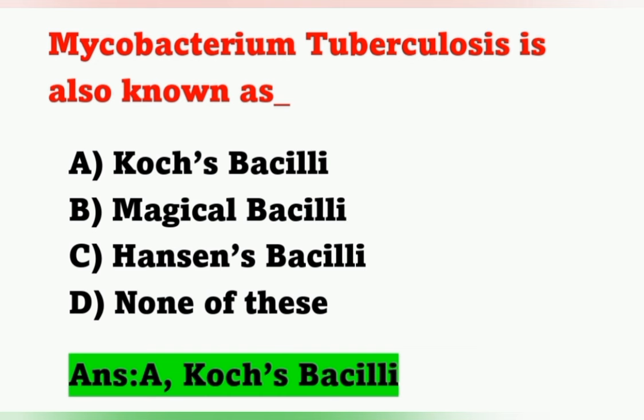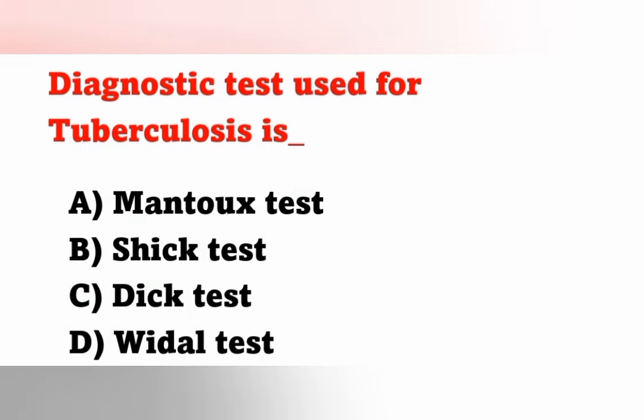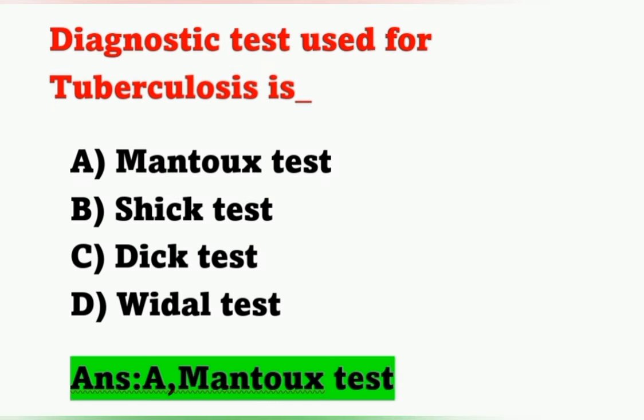The next question: diagnostic test used for tuberculosis. Options: Option A, Mantoux test; Option B, Schick test; Option C, Dick test; Option D, Widal test. The diagnostic test for tuberculosis is the Mantoux test. Option A is the correct answer.